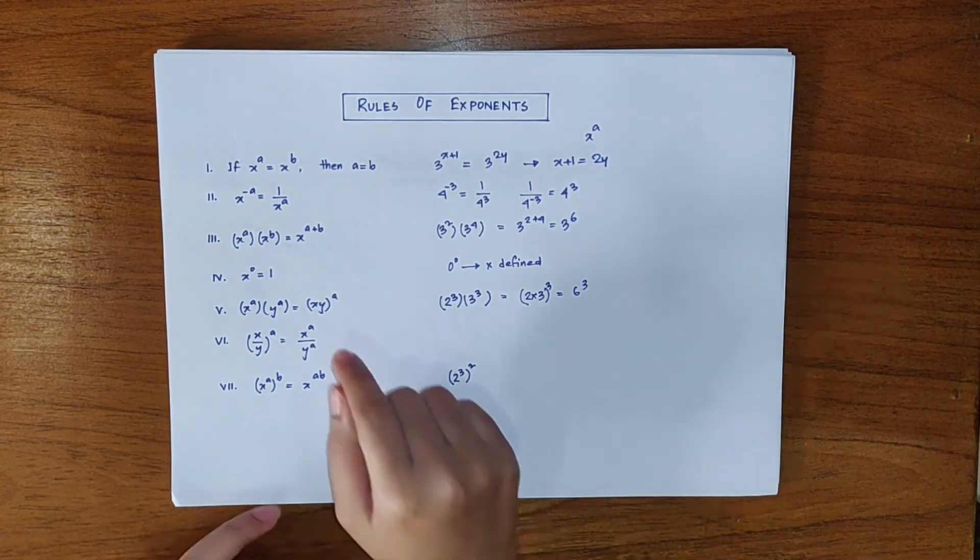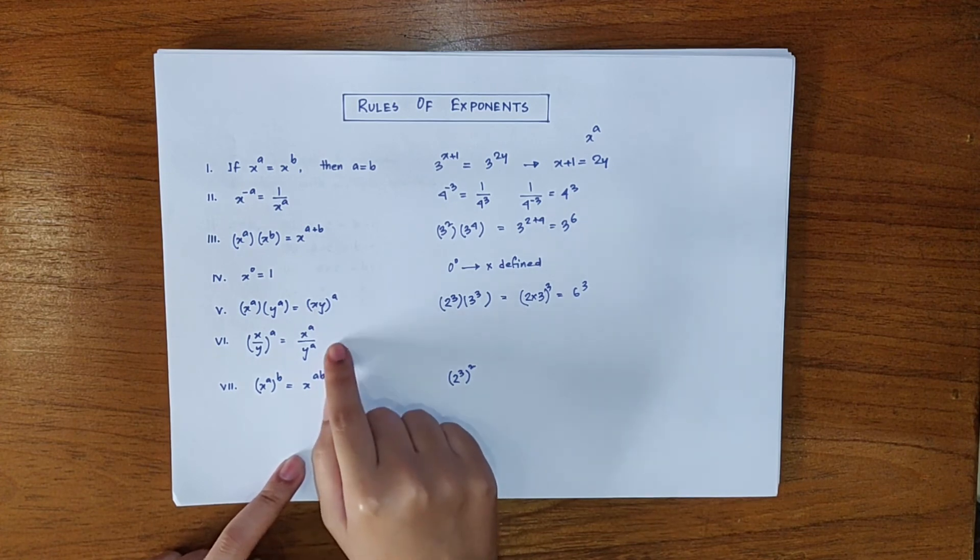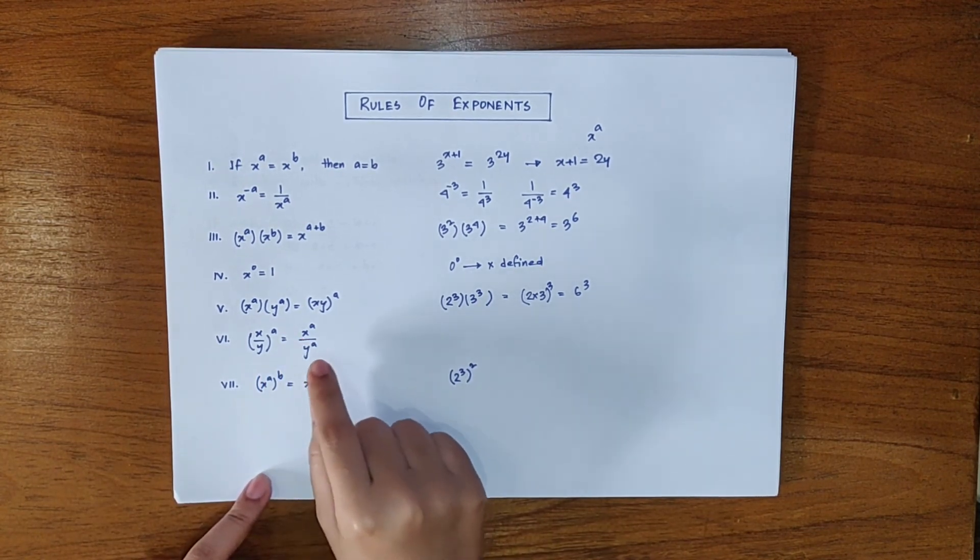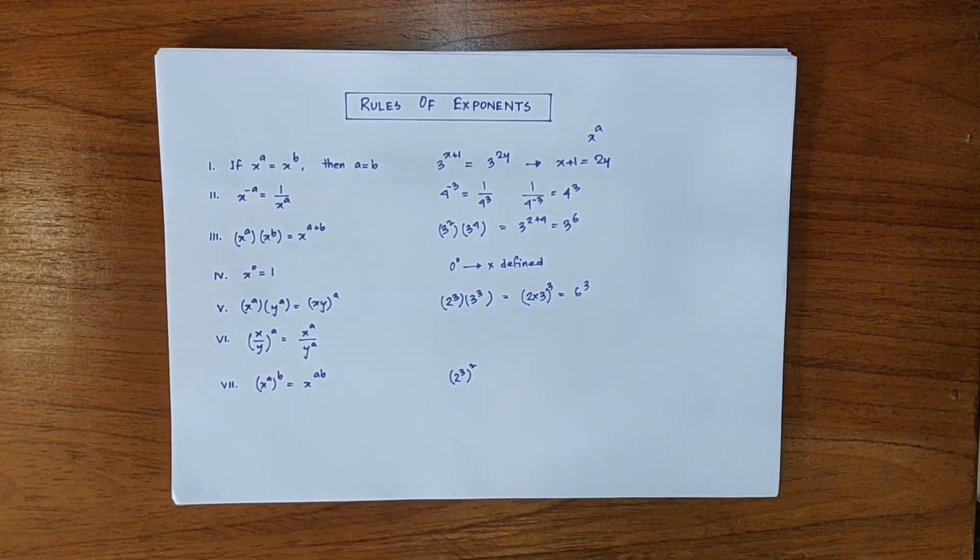Now we have the same type of formula in case of division in this one where x by y to the power a can be written as x to the power a by y to the power a.